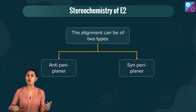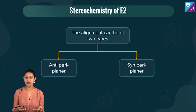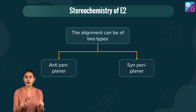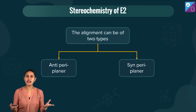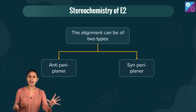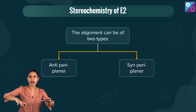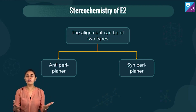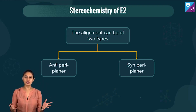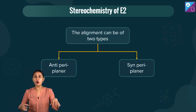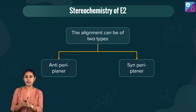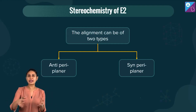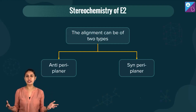There is an SP2 hybridization building up, and SP2 means trigonal planar — so planarity is there. Always think in terms of hybridization: if there is a trigonal planar arrangement, there is planarity being talked about.